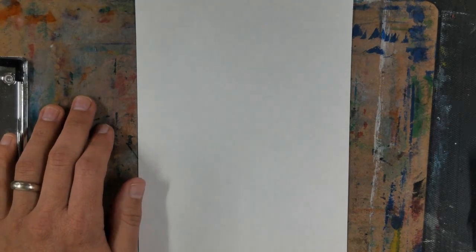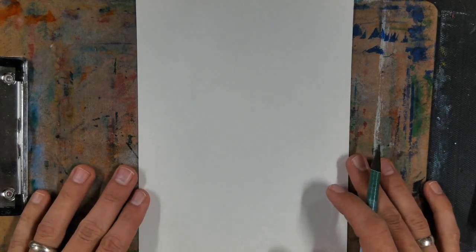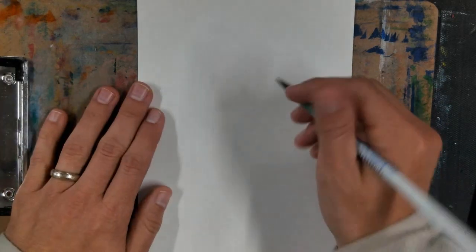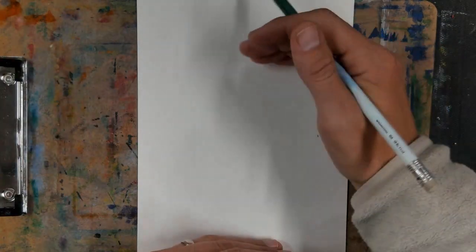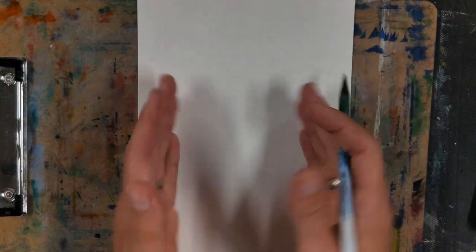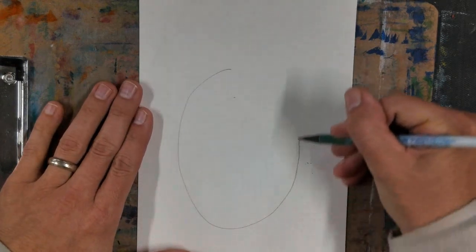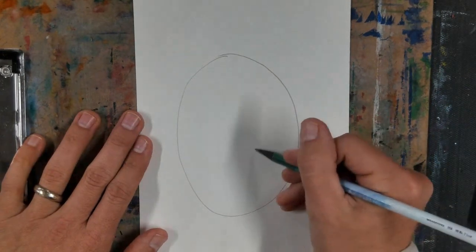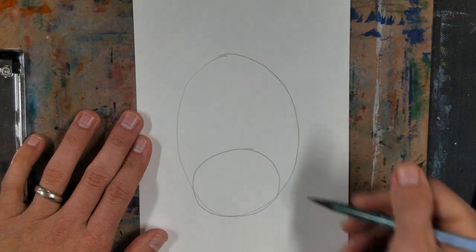To start off with, we need to draw our barnyard animal. I'm gonna make my example a cow, and we're gonna use real simple shapes to draw our animal. So a portrait is, like I said, basically just the face, so the face needs to be really big. I'm gonna draw a great big oval. Then for the cow, I'm going to draw a big circle at the bottom. This is gonna be the cow's nose.